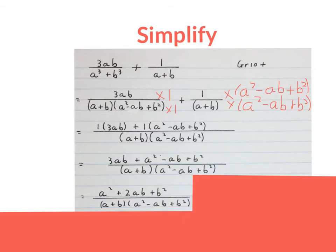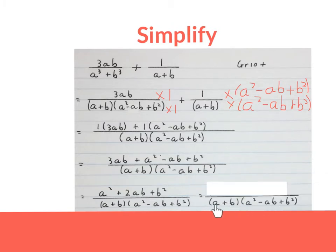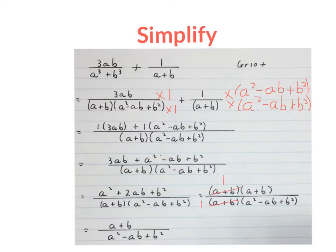Now do be careful — this top can now be factorized further. Keep your lowest common denominator and factorize the top, which is possible in this case. Now something nice will happen: you may cancel — that bracket goes into itself once and that bracket goes into itself once.